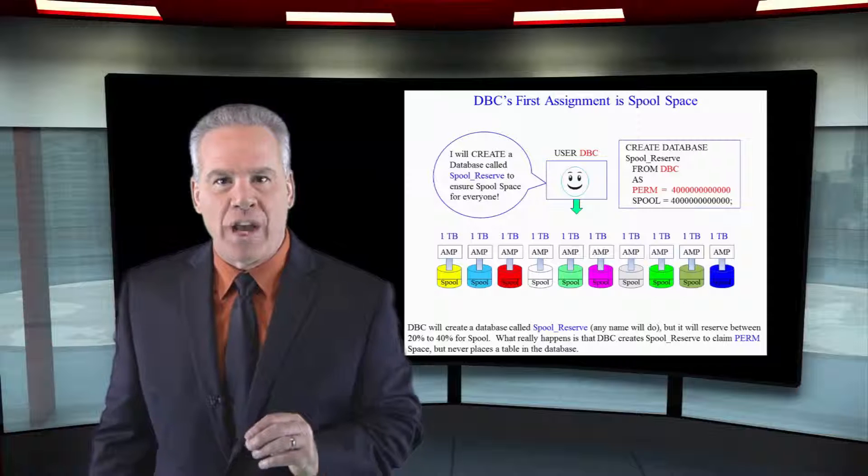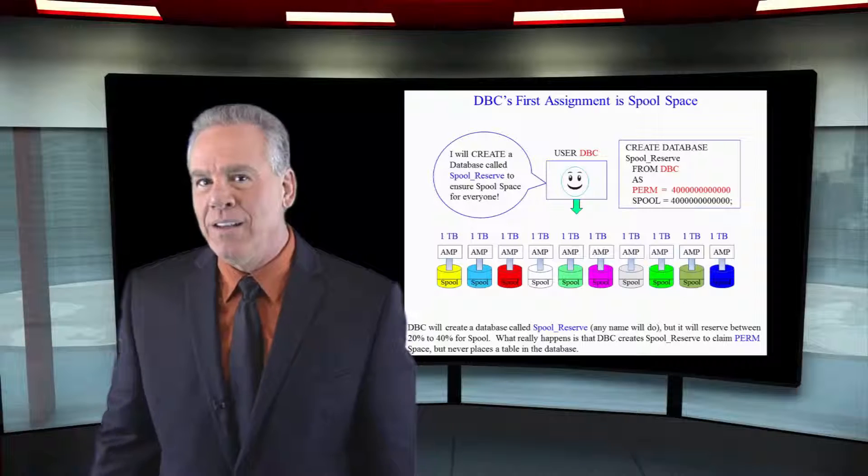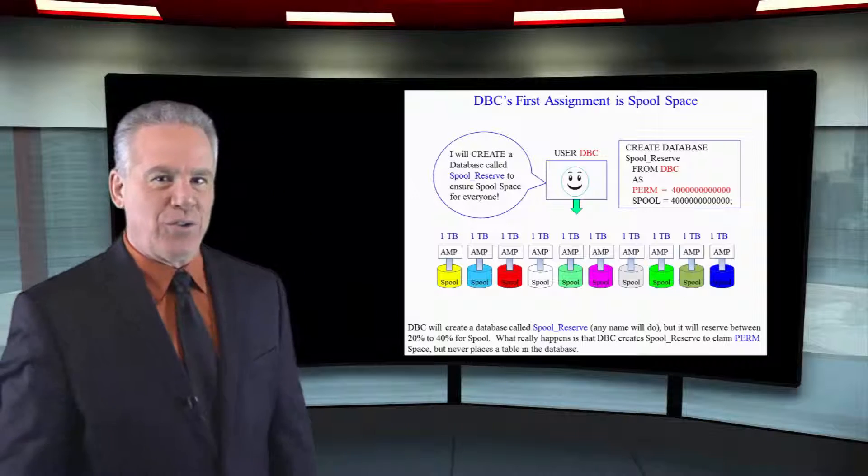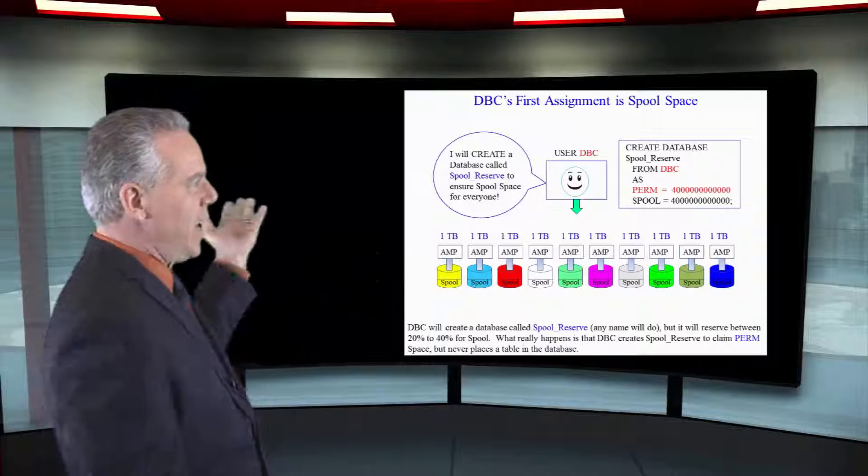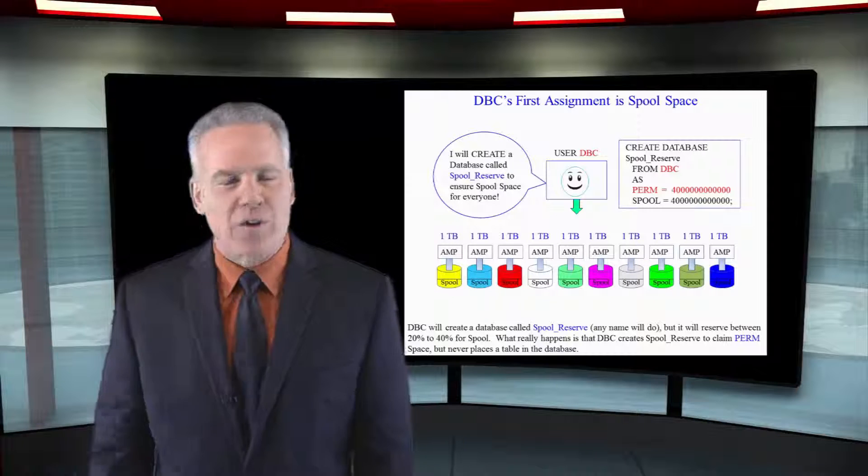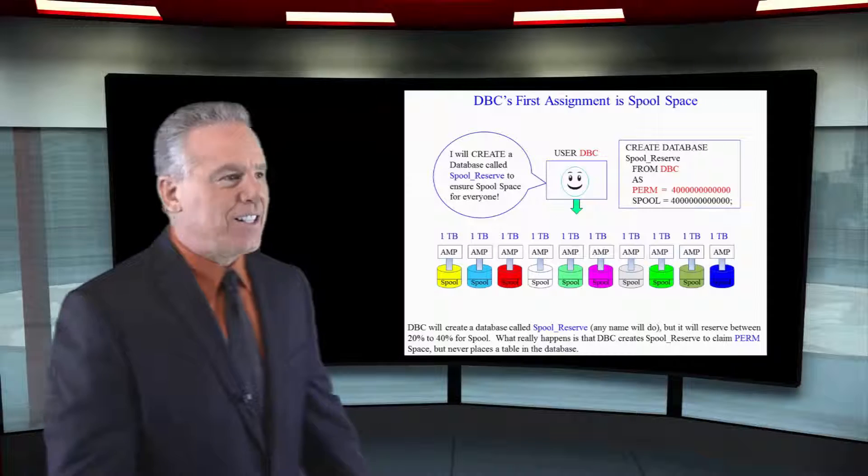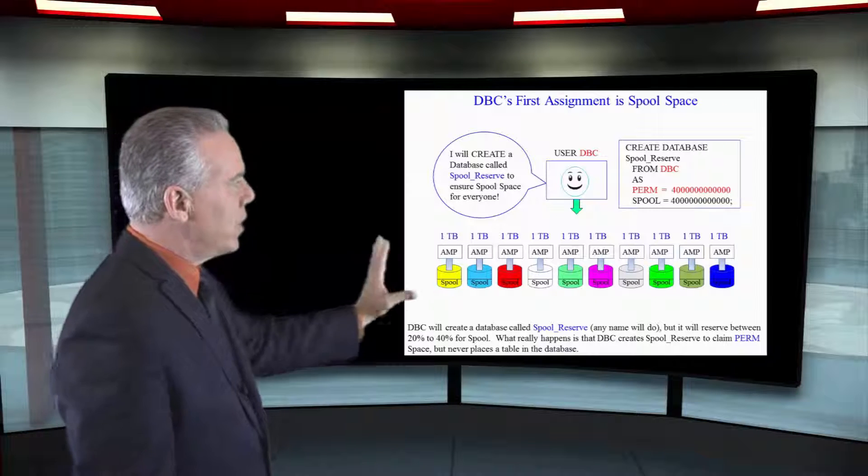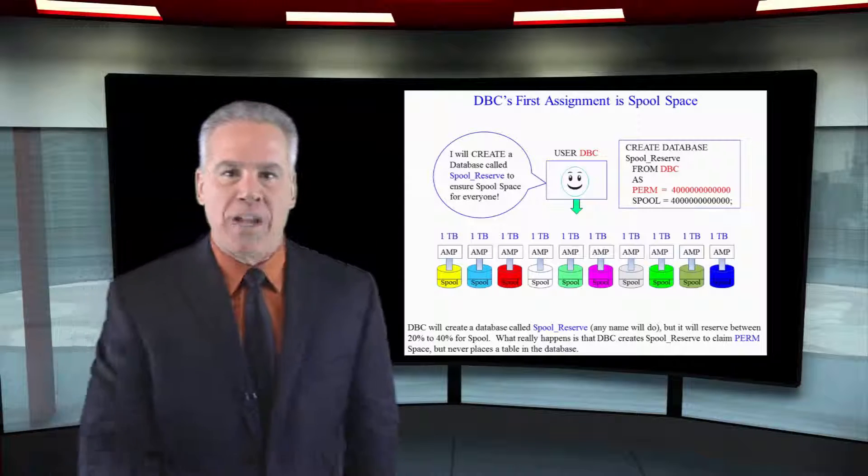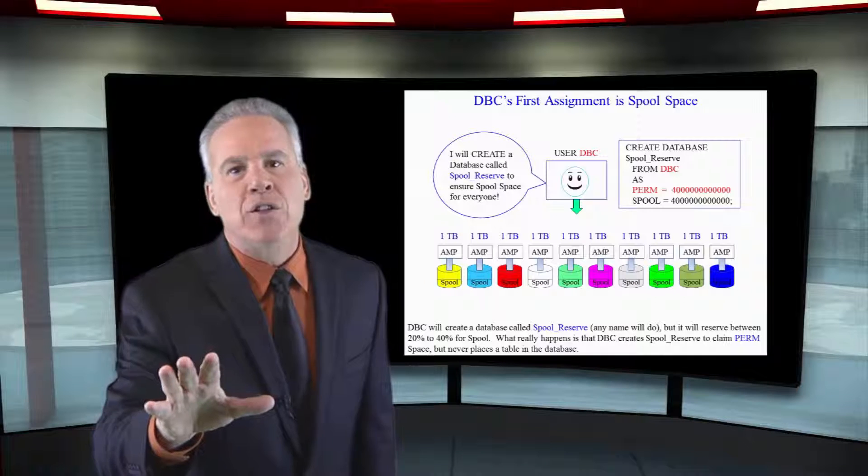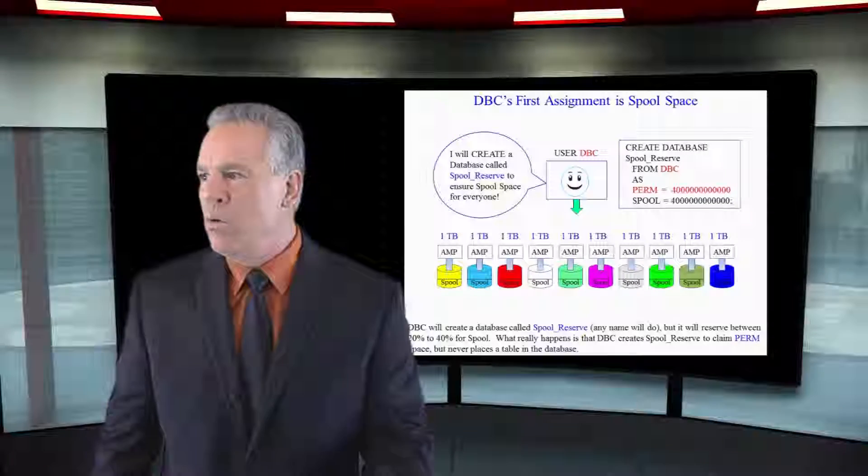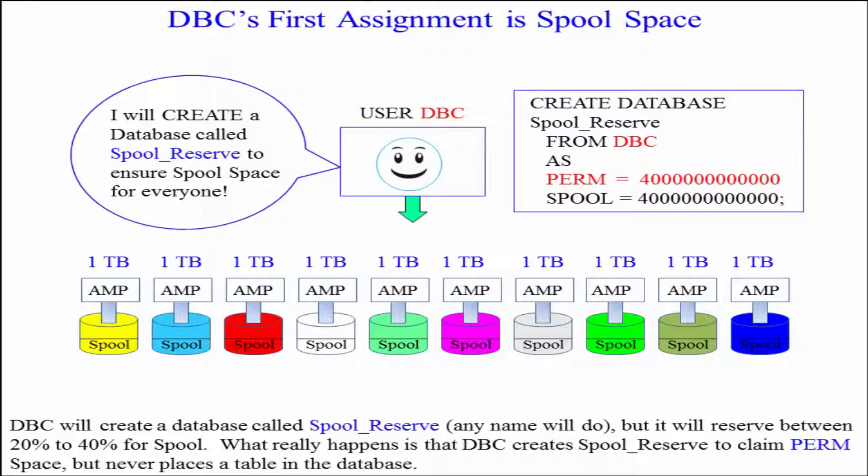I once saw someone log on and they said, I'm going to create spool space for users. And they actually said, create database spool_reserve. You could give it any name you want. And then they said, I'm going to create four terabytes of perm. And I said, stop, you meant spool. And they go, no, perm. And I go, really? But I thought you wanted to save spool space. And they said, I am.